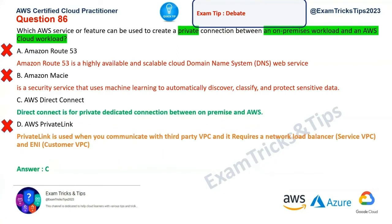So option D is ruled out and we're left with option C. Once you eliminate the wrong answers and focus on the two remaining options — C and D in this case — and understand the exact use case and what each service is made for, you can select the correct answer. That's how we got to AWS Direct Connect, option C, which is the correct answer for this question.